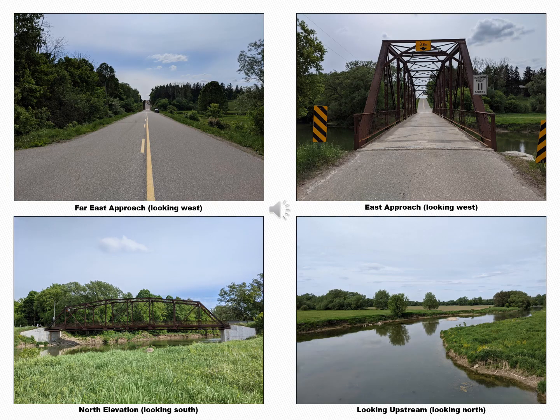This slide has four images of the Bridge Street Bridge and surrounding area. The first image is of the far east approach, looking to the west. The second image is of the east approach, looking west. The third image is of the north elevation, looking south. The fourth image is of the view upstream, looking north.